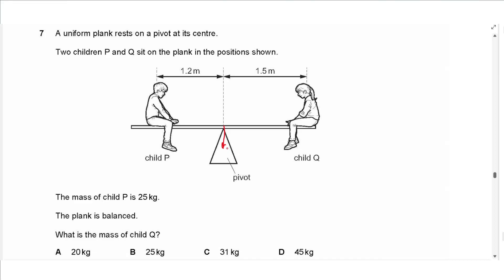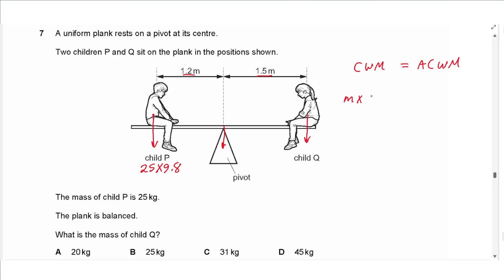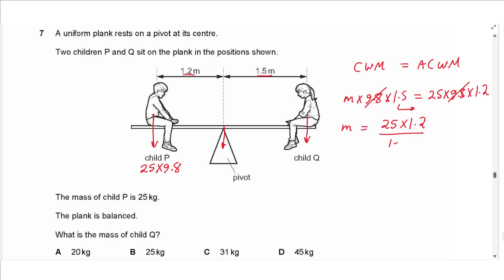Question 7 says: a uniform plank rests on a pivot at its center. Uniform means the weight acts at its center and the pivot is at the center, so the weight has no moments. Two children P and Q sit on the plank at distances 1.2 and 1.5 meters from the pivot. The mass of child P is 25 kilograms. Using clockwise moments equals anti-clockwise moments: mass of Q times 9.8 times 1.5 equals 25 times 9.8 times 1.2. The 9.8 cancels, giving mass of Q equals 25 times 1.2 divided by 1.5.